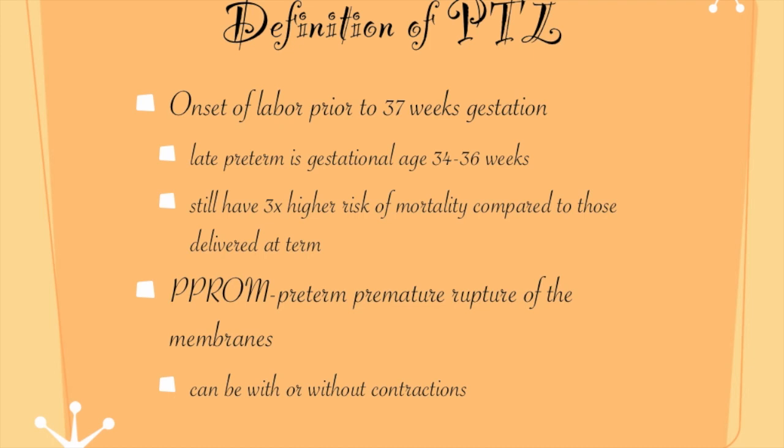Let's begin with the definition of preterm labor. Basically, it's the onset of labor prior to 37 weeks gestation. In order to get into labor and delivery, a patient has to be at least 20 weeks. We can further define preterm labor as late preterm, which is a gestational age between 34 and 36 weeks. We separate these because the 34 to 36 week preterm baby has far fewer problems associated with birth than a fetus that is between 20 and 34 weeks. However, these babies still have a three times higher risk of mortality compared to those delivered at term, so we have to watch them carefully.